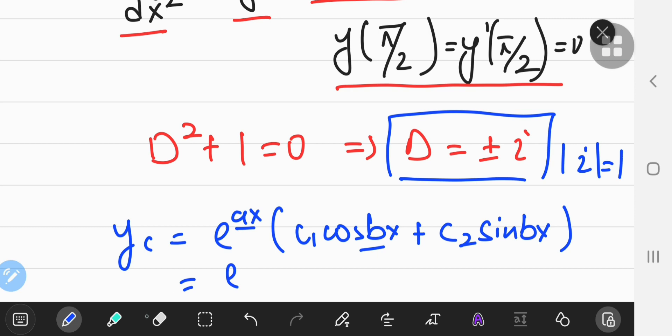So e to the 0x is just 1, and we have c1 times cos x plus c2 times sine x, and that is your characteristic solution. Now we are out to find the particular solution.